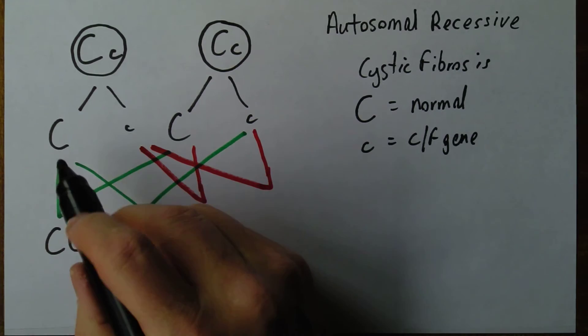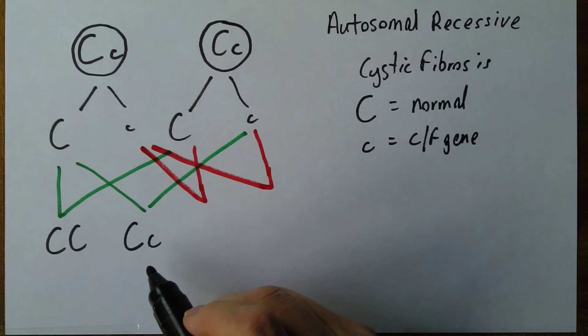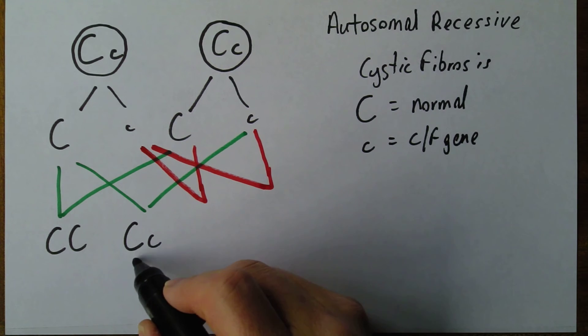Now alternatively that big C there combined with that small c there, and that would give us a child who was genotypically heterozygous. Fortunately they won't suffer from the disease because they have a copy of the normal dominant gene. But of course they could potentially carry that on to the next generation.